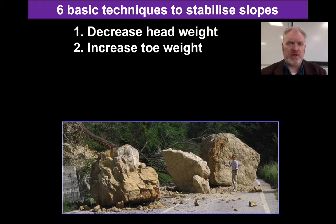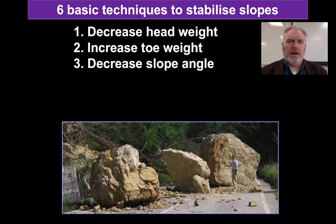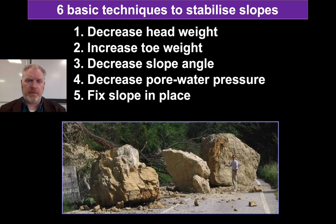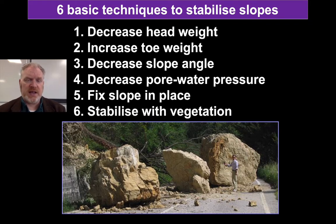A wall, for example, would increase toe weight. In line with decreasing the head weight, you could also decrease the slope angle — it's the same type of idea with the same type of issues. As always, we must consider water. Decreasing the pore water pressure will increase the friction that's keeping the slope in place. You could also pin the slope in place — fix it, stop it moving. Or finally, stabilize it perhaps with vegetation. Clearly not all of these are going to work in all circumstances.